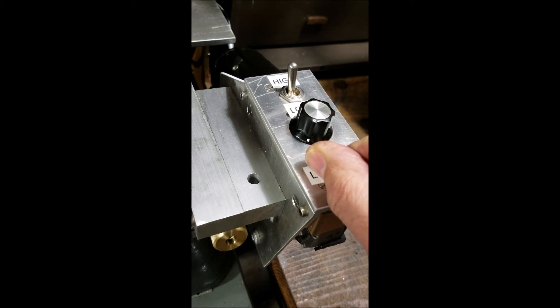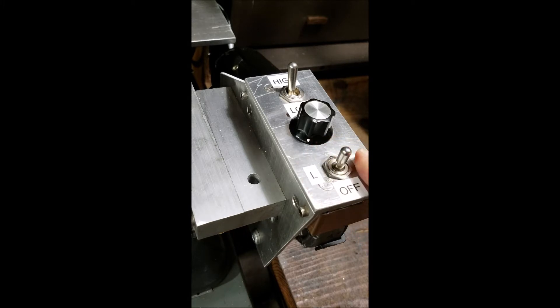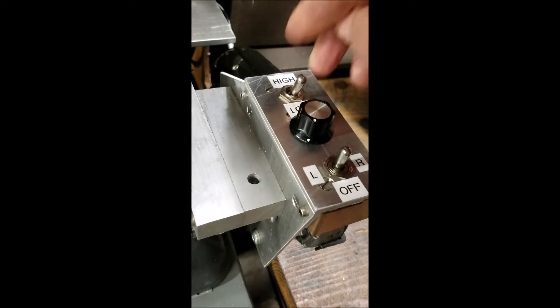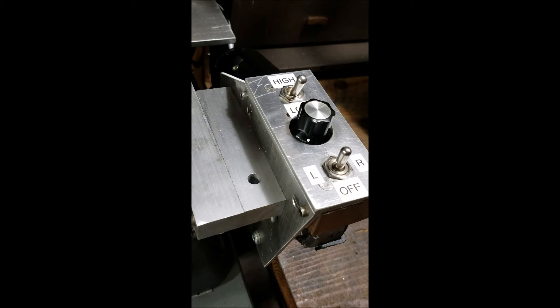You can hear that the motor is not dogging down at all. Of course, it's not driving anything but the cross slide. Okay, so that's how the controls work. Now I'm going to reposition you in a second here over the cross slide, and we'll show you how it runs from that end of the lathe.